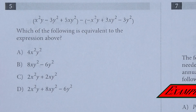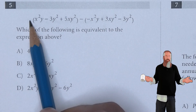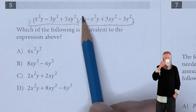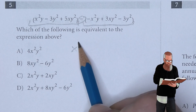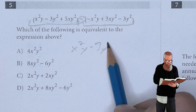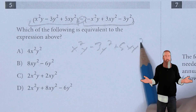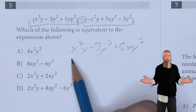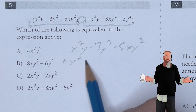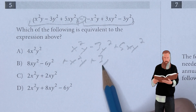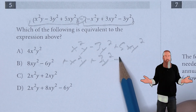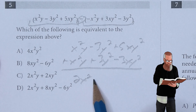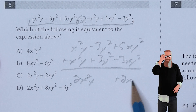Which of the following is equivalent to the expression above? We have two terms held within parentheses, and we need to distribute the negative sign. Writing out the first term: x squared y minus 3y squared plus 5xy squared. Distributing the second term underneath gives plus x squared y plus 3y squared minus 3xy squared. Combining like terms gives us 2x squared y plus 2xy squared, which is C.